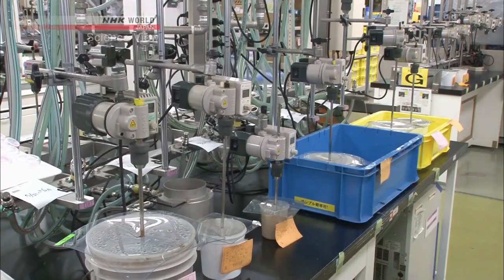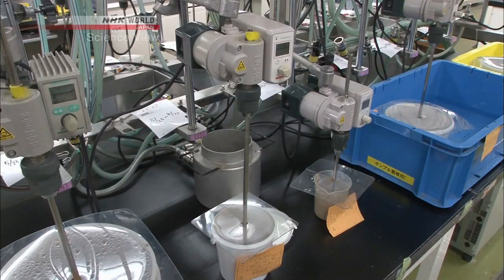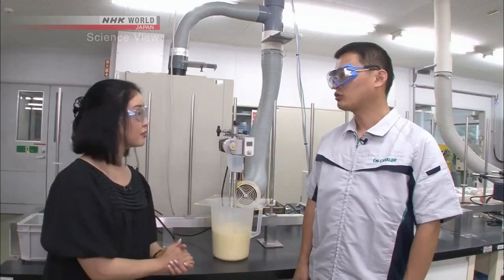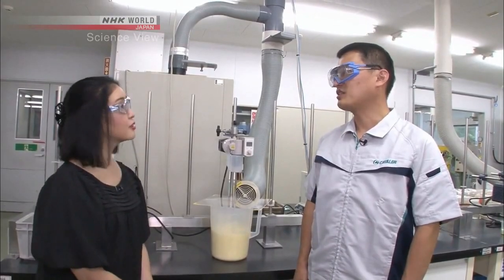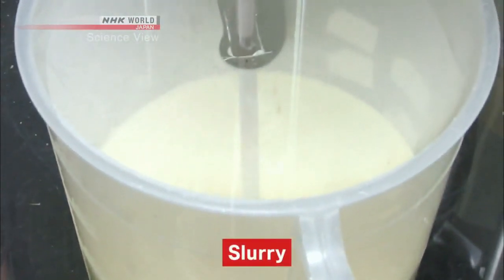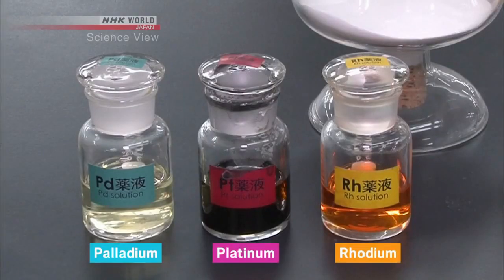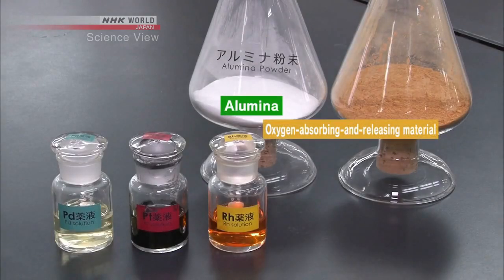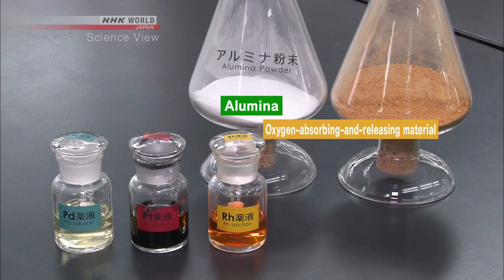Mr. Ori, what are all these that are turning? These are solutions used to coat the catalytic converter. We call this slurry. Contained in the fluid, called slurry, are elements such as palladium, platinum, rhodium, as well as alumina, an oxygen-absorbing and releasing material, which are catalytic components.